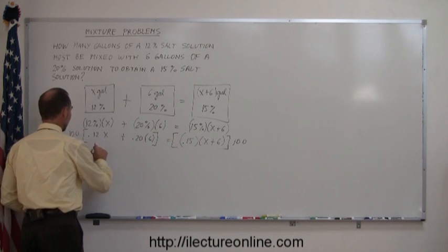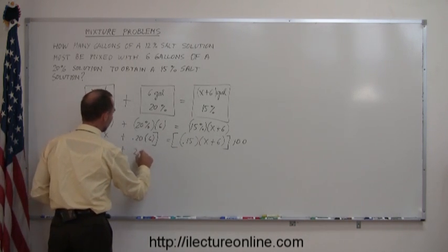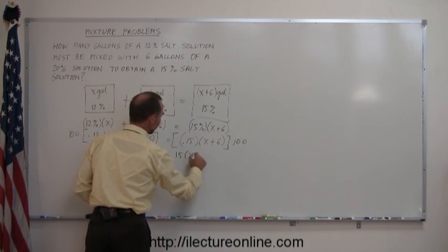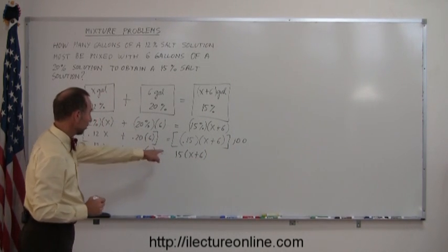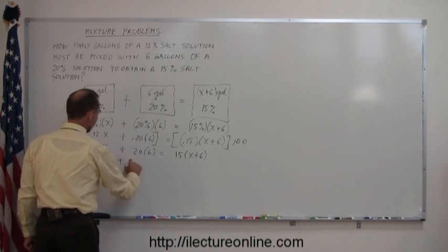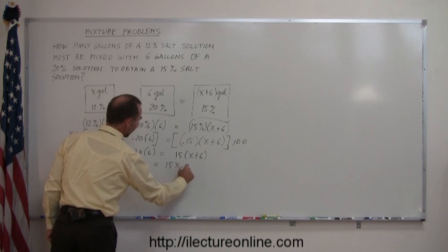So, 100 times 0.12 is 12X, 100 times 0.20 is 20 times 6, and 100 times 0.15 is 15 times X plus 6. Next step is to get rid of the parentheses. We have parentheses here and there, so we multiply these out. We get 12X plus 120 equals 15X plus 90.